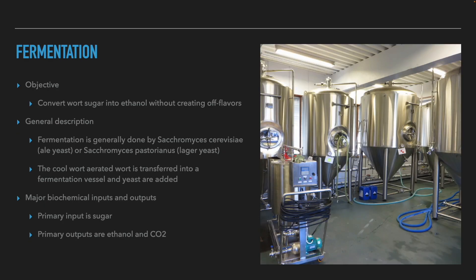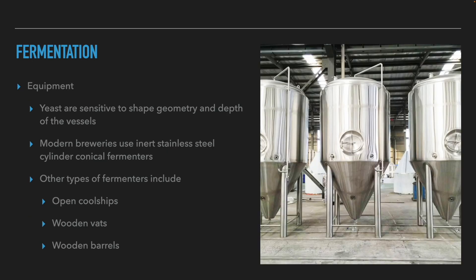After pitching, fermentation starts. The objective of fermentation is to convert the sugar into ethanol and CO2 without creating off-flavors. Yeast are added to the oxygenated wort and mainly convert the sugars into ethanol and CO2, along with other compounds at lower rates. Beer fermentation is generally done by Saccharomyces cerevisiae for ale fermentation, or by Saccharomyces pastorianus for lager fermentation. Modern breweries normally use inert stainless steel cylindroconical vessels, but fermentation can also be done in open cool ships, wooden vats, or wooden barrels — each will have different effects on the beer.